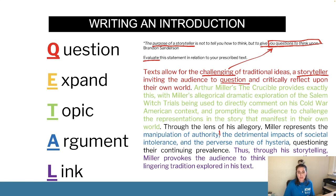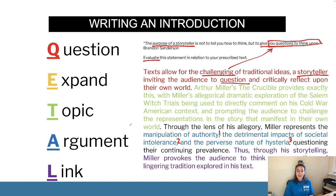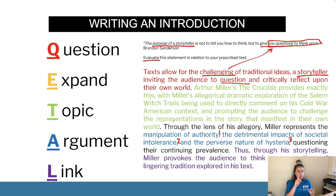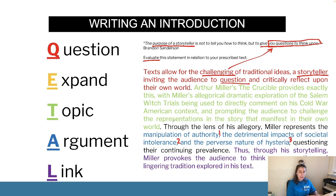'Miller represents the manipulation of authority' - body paragraph one; 'the detrimental impacts of societal intolerance' - paragraph two; 'and the perverse nature of hysteria' - paragraph three, questioning their continuing relevance. That's the argument - I'm just talking through X, Y and Z. For instance in Modern History you might say 'The success of the Vietnamese army came down to good local support, psychological tactics, and the failure of the American offensive.' Provided you're giving enough context, you don't have to keep expanding on those arguments since you'll expand on them in body paragraphs anyway.